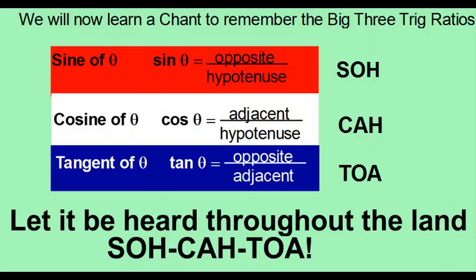Many teachers, including myself, teach the chant SOHCAHTOA to help remember the ratios in these three trigonometric functions. I'm not a big fan of mnemonics, but in some cases they can be helpful. SOHCAHTOA stands for: sine is opposite over hypotenuse (SOH), cosine is adjacent over hypotenuse (CAH), and tangent is opposite over adjacent (TOA).